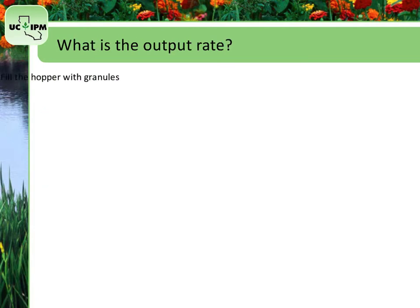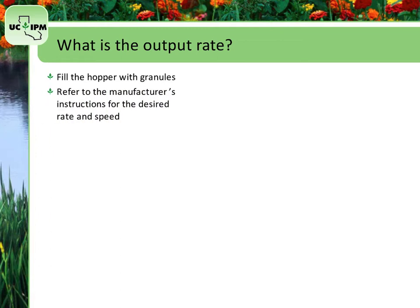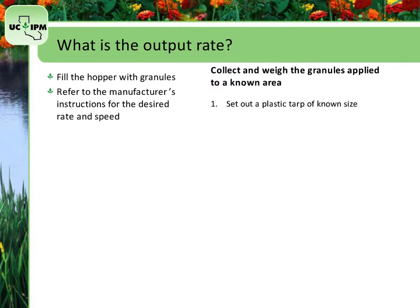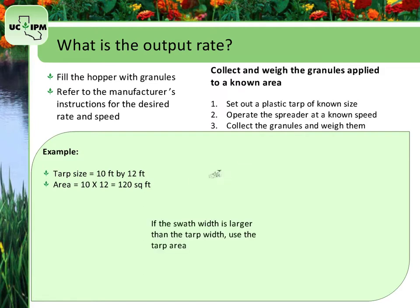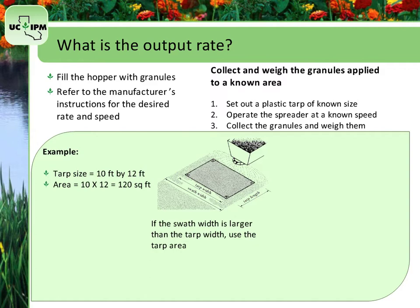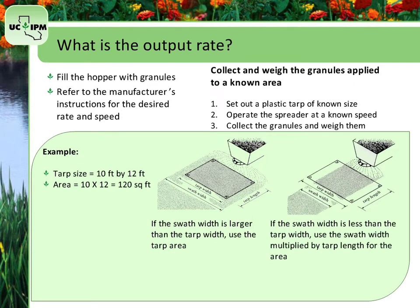To determine the output rate, fill the hopper with the granular pesticide. Most granular hoppers have adjustable openings for the granules to pass through. Refer to the manufacturer's instructions to determine the appropriate opening for the desired rate and, if using a tractor, the speed of the tractor. The easiest way to calibrate a granule spreader is to collect and weigh the granules applied to a known area. Spread out a plastic tarp of known size on the ground and operate the spreader at a known speed across the tarp. Collect the granules from the tarp into a container and weigh them. If the swath width is larger than the tarp width, use the area of the tarp in the calculations. However, if the swath width is less than the width of the tarp, then calculate the area by measuring the actual swath width and multiplying it by the length of the tarp.